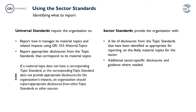A Sector Standard can also help an organisation determine what to report for their material topics. In addition to reporting on how a topic is managed using GRI 103 material topics, the Exposure Draft of the Universal Standards requires organisations to report for each material topic the appropriate disclosures from the GRI Standards that correspond to the topic. If a material topic does not have a corresponding topic standard, or the corresponding topic standard does not provide appropriate disclosures for the organisation's impacts, the organisation should report appropriate disclosures from other topic standards or other sources.